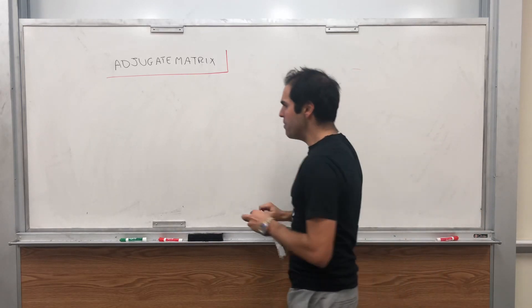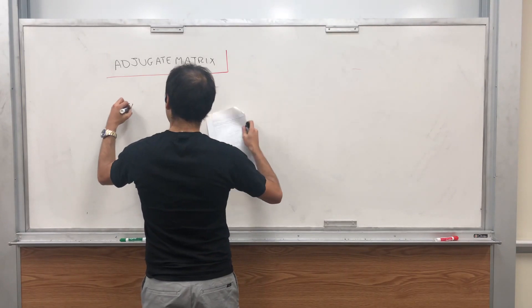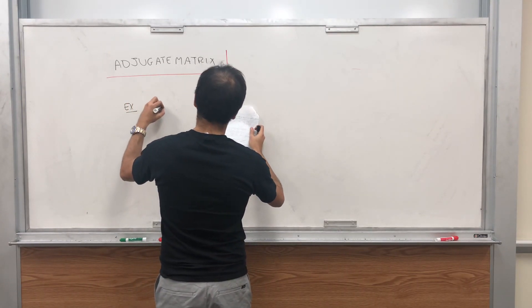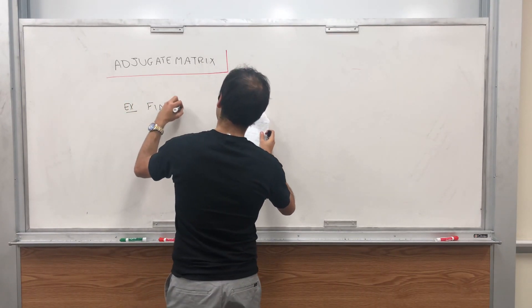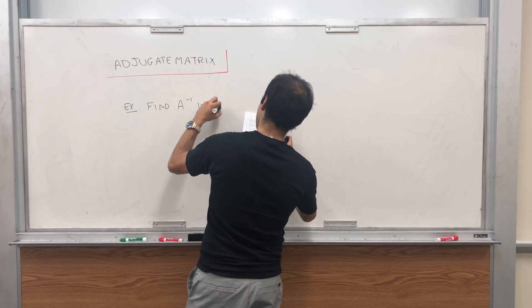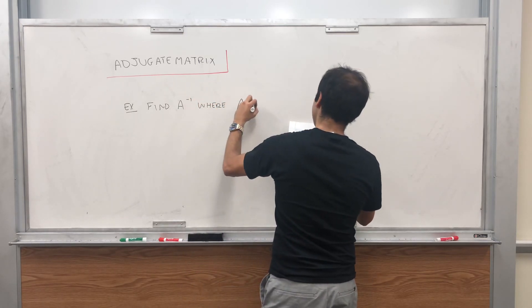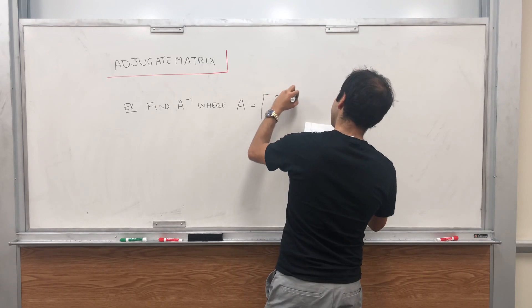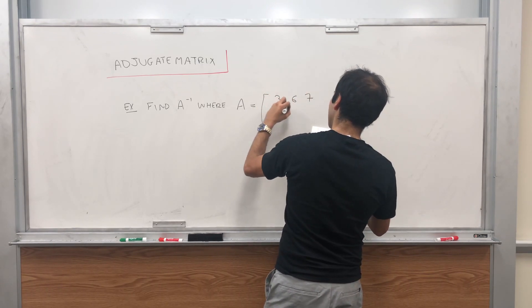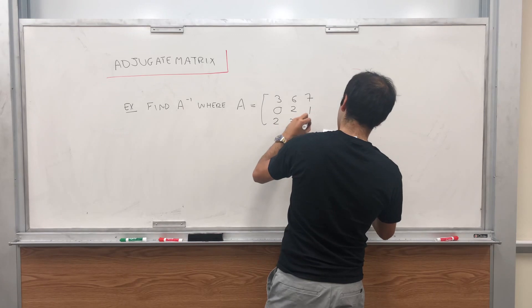Let me give you the example first. We'll try to find A inverse where A is simply the matrix 3, 6, 7; 0, 2, 1; 2, 3, 4.